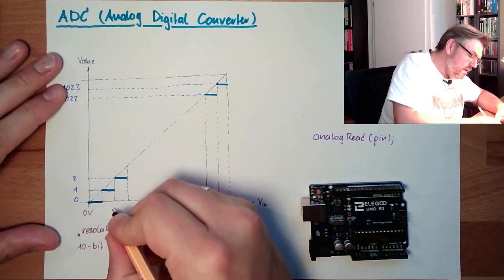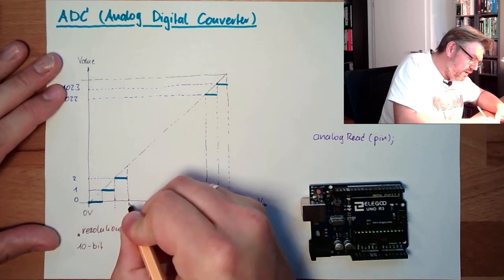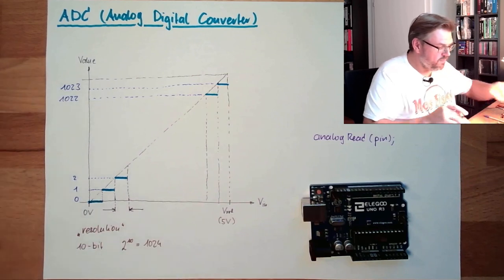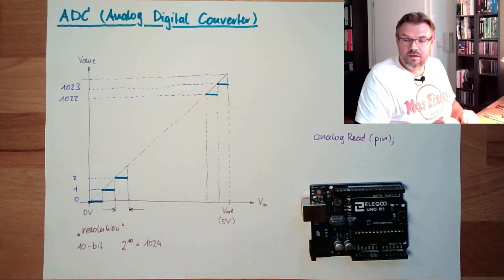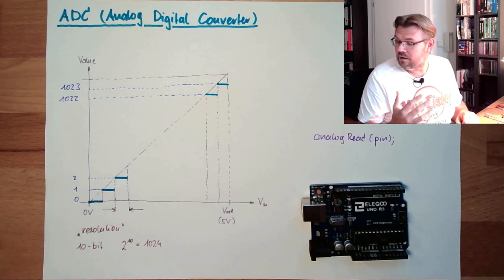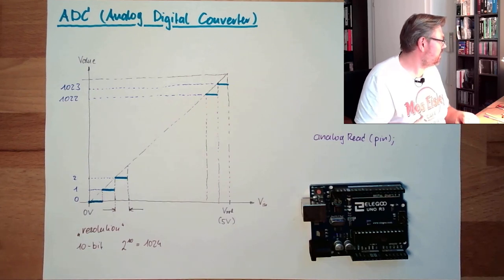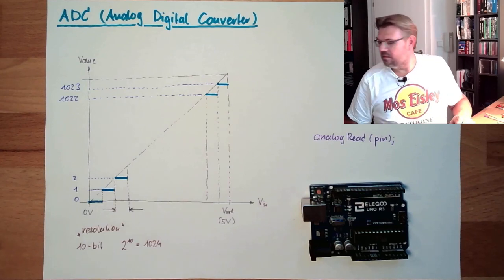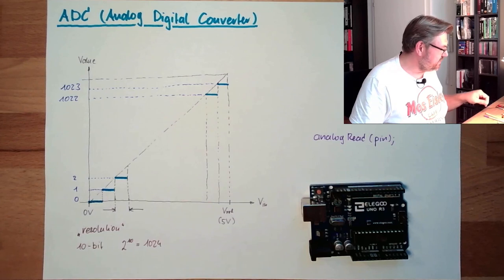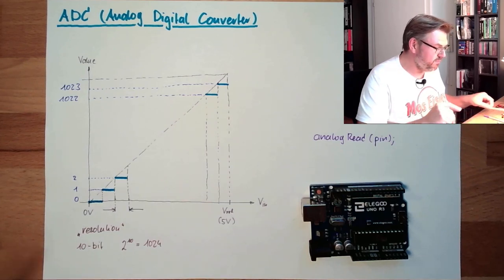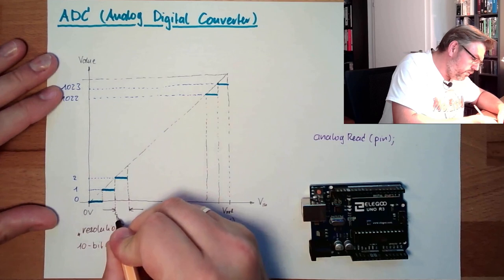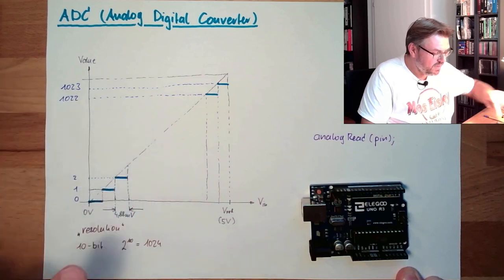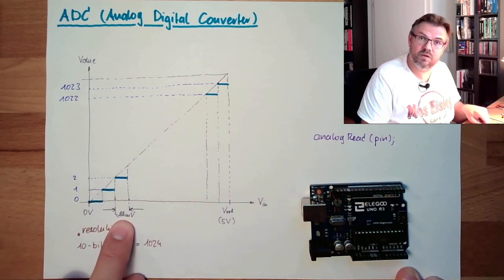What does it mean? If you divide this 5 volts divided by 1024, I'm again searching for my calculator. Luckily, I know it by the top of my head. But this is around 4, you can try it with your calculator. It's 4.88 millivolts.